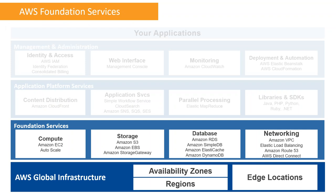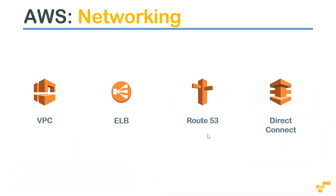That brings us to the end of database services and foundational services. Now let's look at what networking options Amazon provides. There is a VPN connection between your on-premise and cloud world as a broad option. Let's go through each networking service in detail.